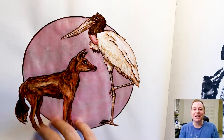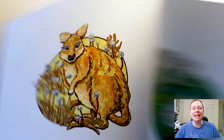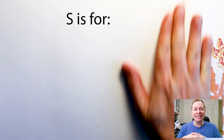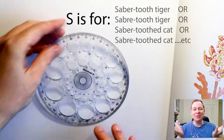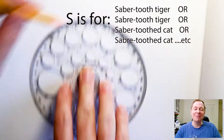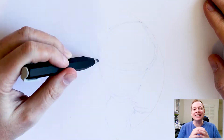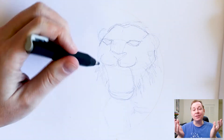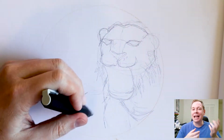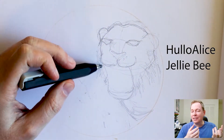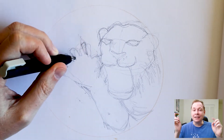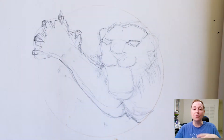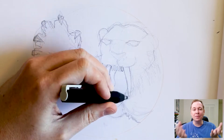G'day art adventurers, welcome back to my channel. My name is Christopher and I am continuing my alphabet animal art challenge, where I Google animals for each letter of the alphabet and Google tells me what animal to draw. I'm also excited to be doing my first collab video for 2019 — it's with someone from The Art Room, a Discord server for YouTube artists, founded by HelloAlice and Jellybee. I'll put the link in the description below.